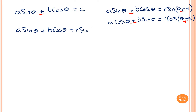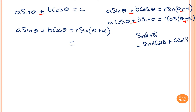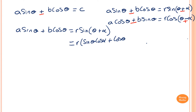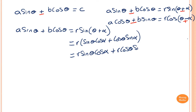Let me expand the right-hand side first. Remember the sine addition formula: sin(θ + α) expands as sinθ·cosα + cosθ·sinα. This will give me r·sinθ·cosα + r·cosθ·sinα.